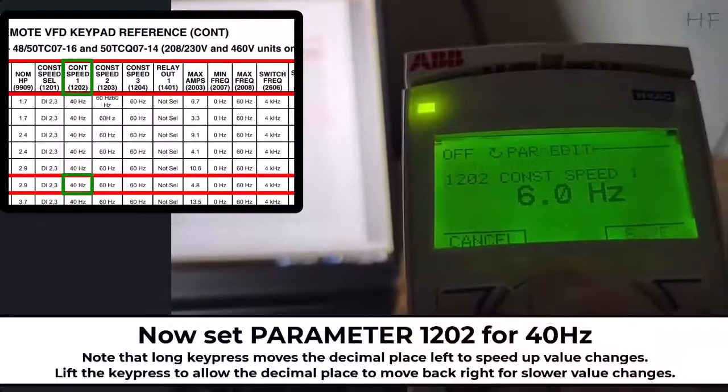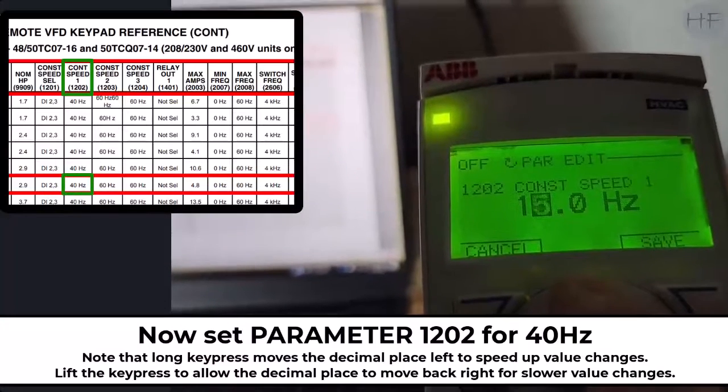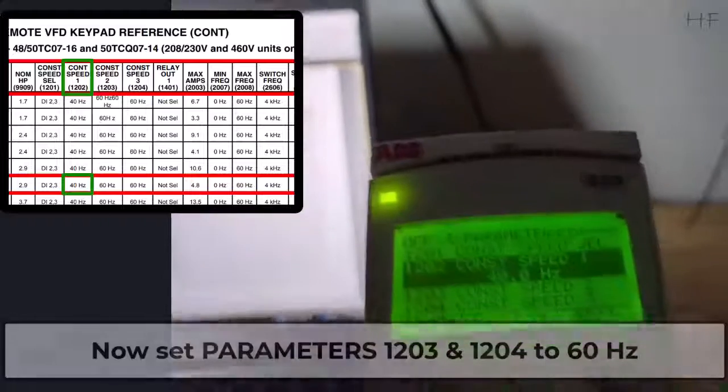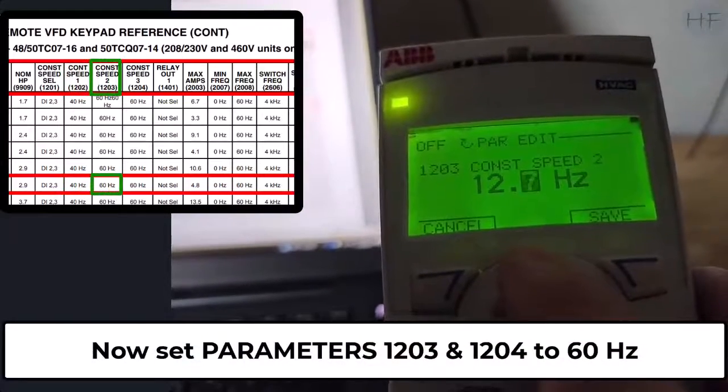Now set parameter 1202 for 40Hz. Note that a long key press will move the decimal to the left to speed up value changes. Now set parameter 1203 and parameter 1204 to 60Hz.